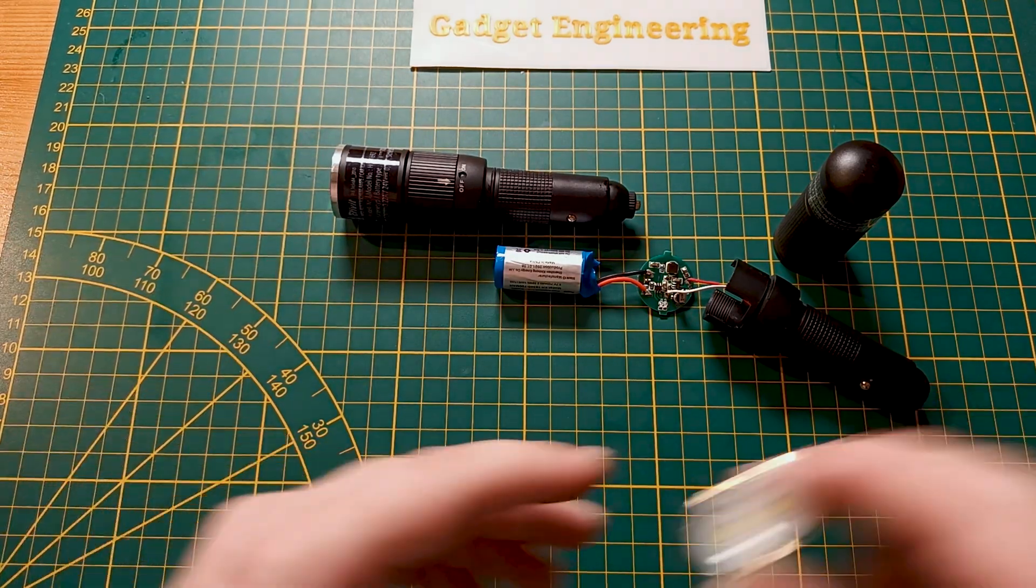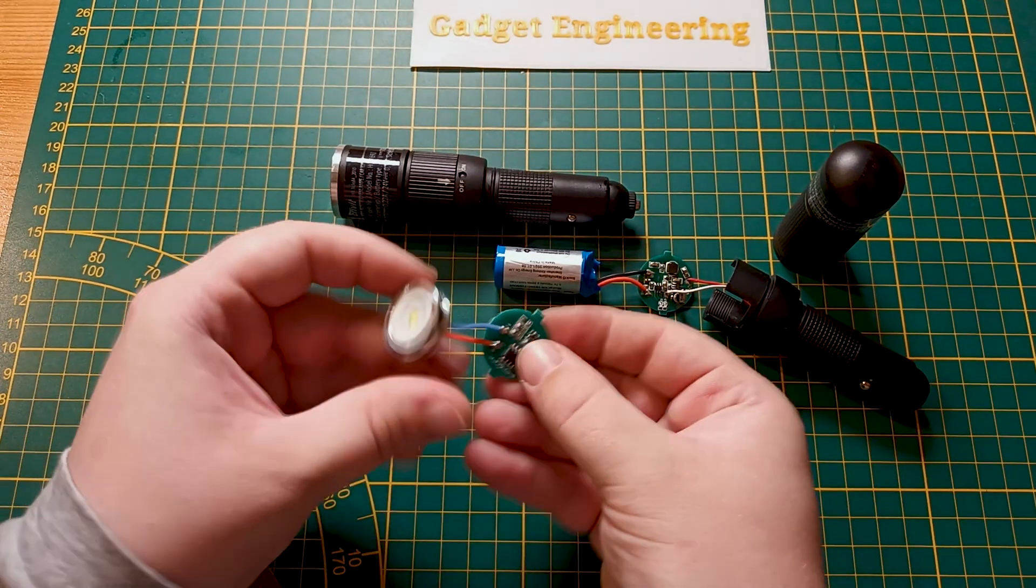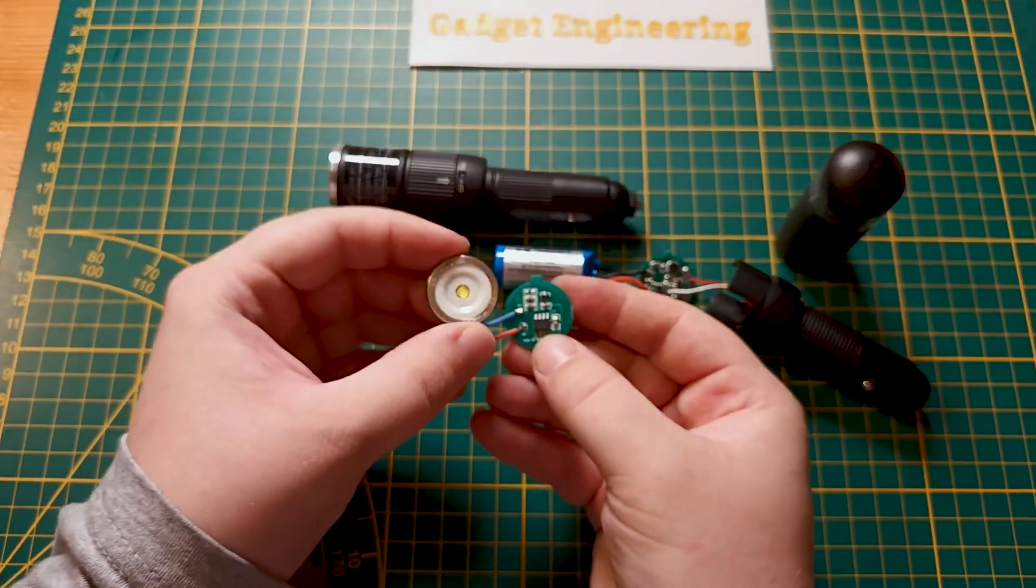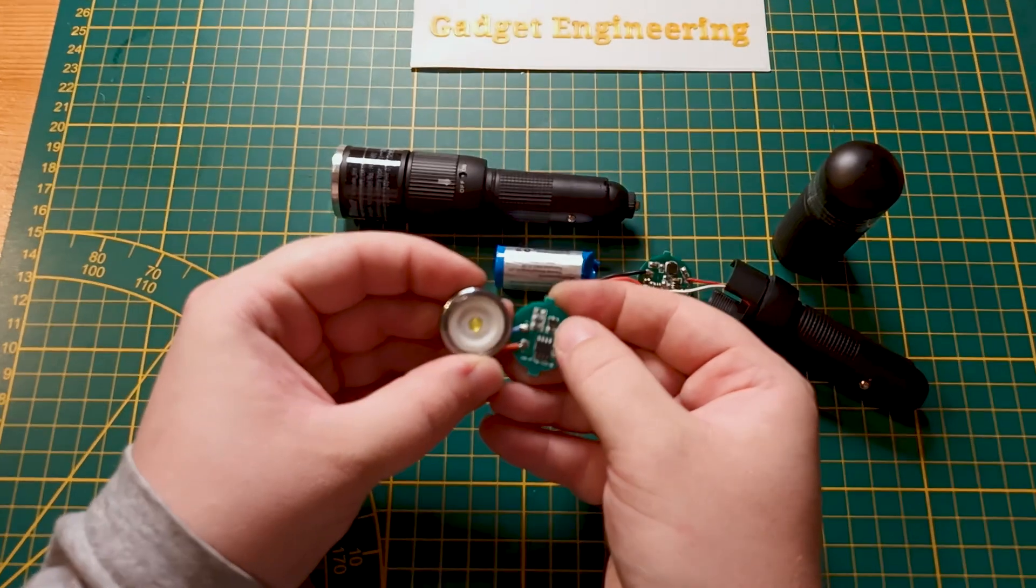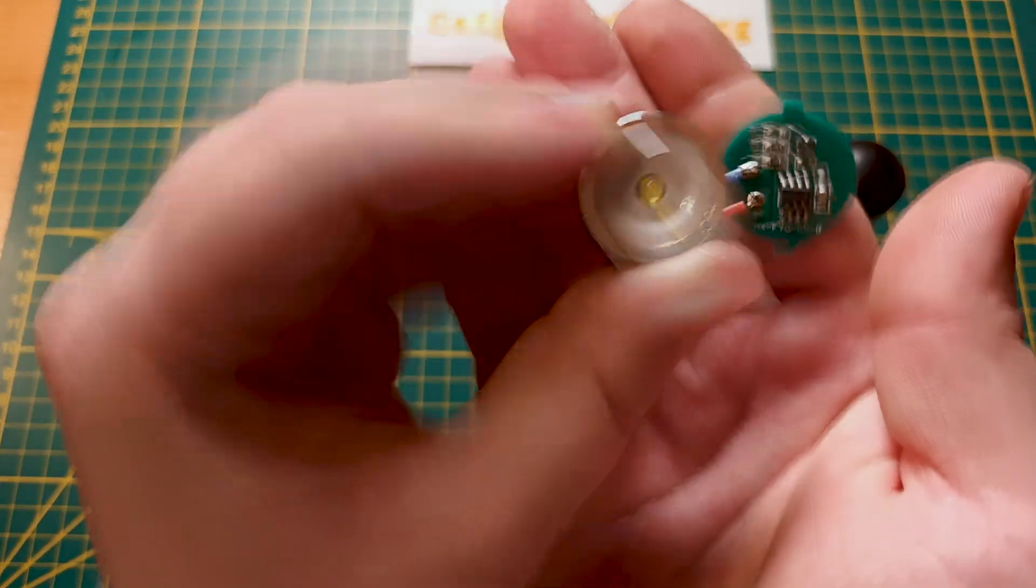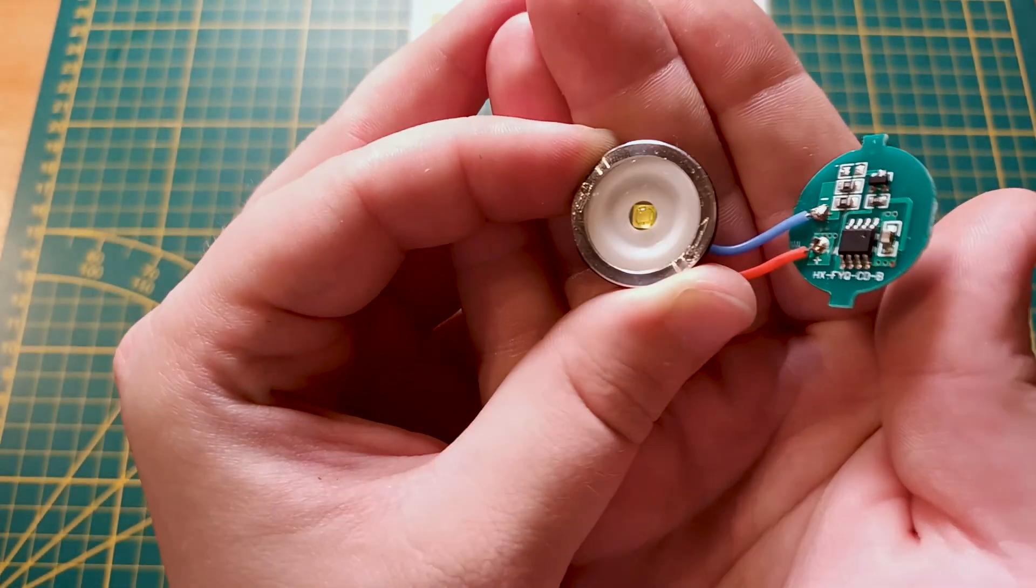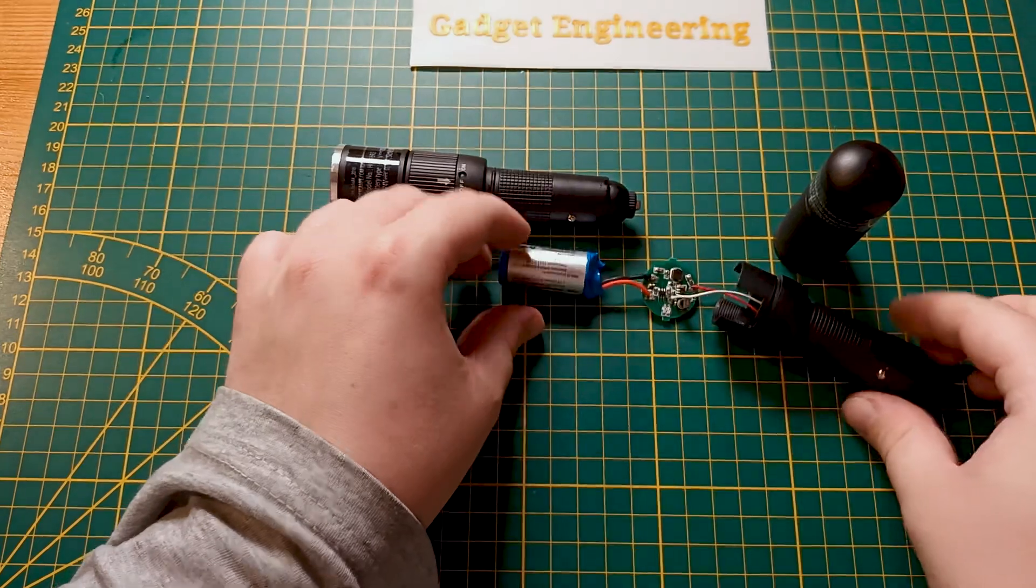So all in all, a fairly good torch. You can see here, this is the LED part that has its control chip and MOSFET and the Cree XTE LED integrated there, if we can just get this to focus. And on the bottom end...